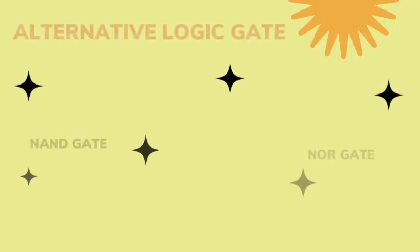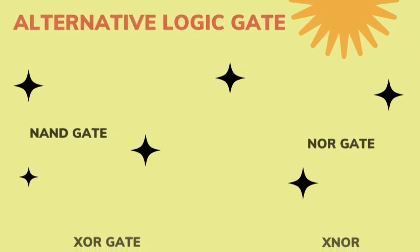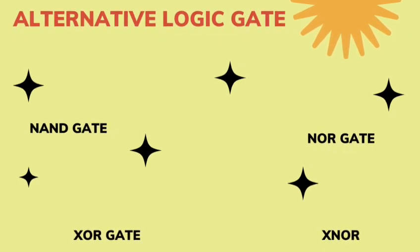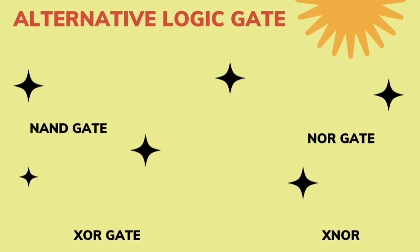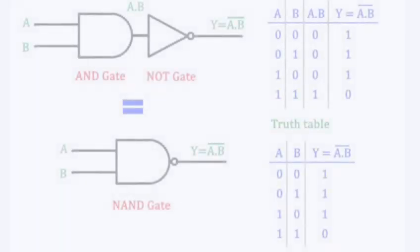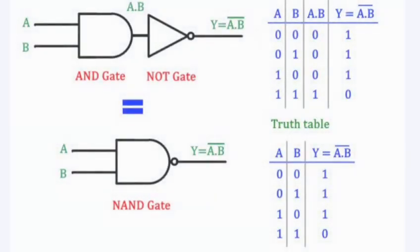In this class, we'll be talking about the alternative logic gates, which include the NAND gate, the NOR gate, the XOR gate, and the XNOR gate. These four gates make up the alternative logic gates. The NAND and NOR gates are called universal gates. The XOR gate is also called the exclusive OR gate, and the XNOR is also called the exclusive NOR gate.